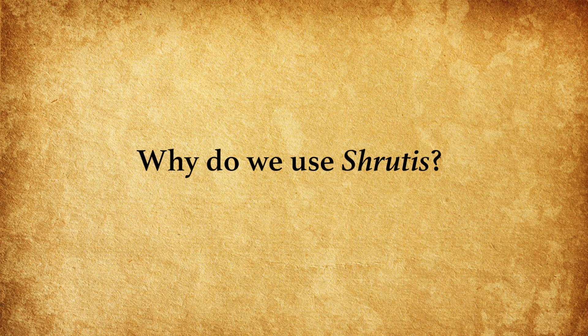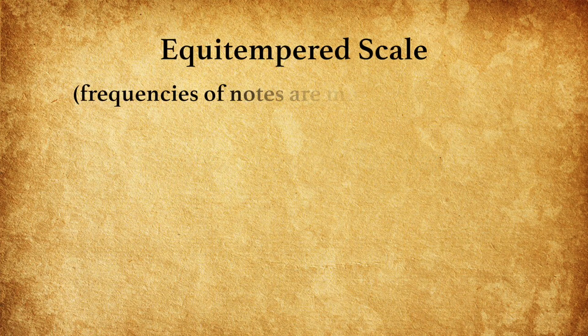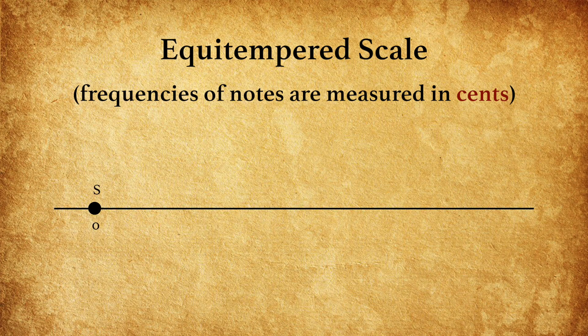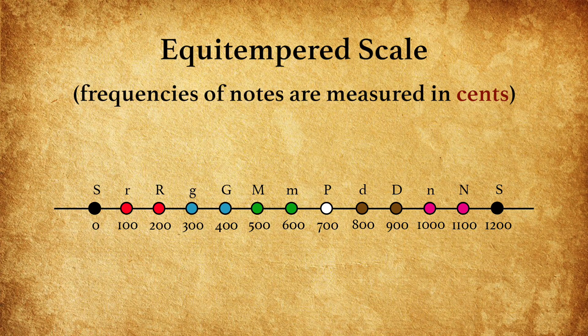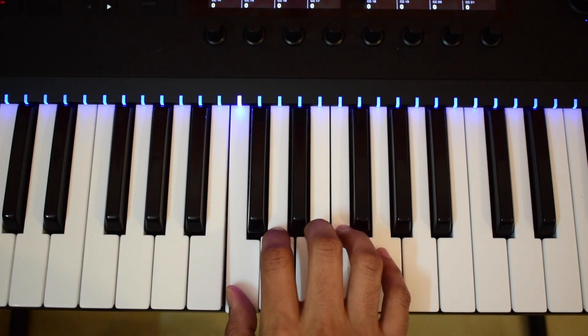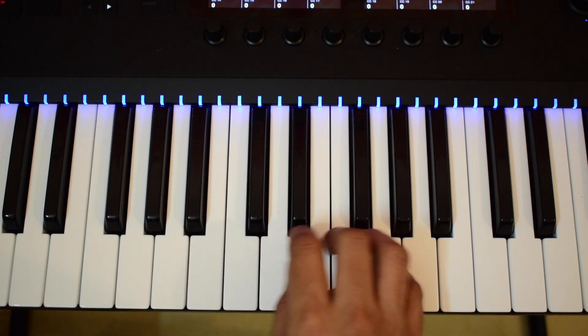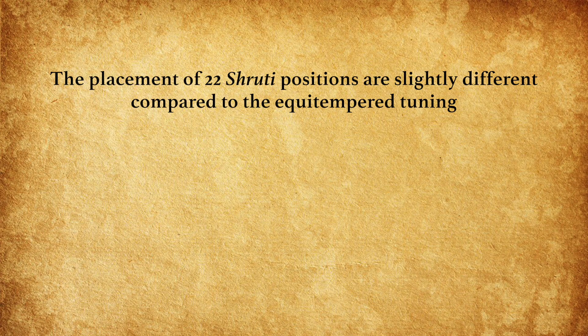Why do we use these Shrutis? Today, in the equal-tempered scale, cents is used as the main measure. If Sa is at 0, then the higher Sa is 1200 cents. A whole octave is divided equally by 12, and notes are placed at an equal distance of 100 cents from each other. So Sa at 0, Komal Re at 100, Shuddha Re at 200, Komal Ga at 300, Shuddha Ga at 400, and so on — this is called the equal-tempered or EQ tuning. All pianos in the world today are tuned to the equal-tempered scale. In comparison, the placement of the 22 Shruti positions are slightly different and have perfect consonance — Samvad.